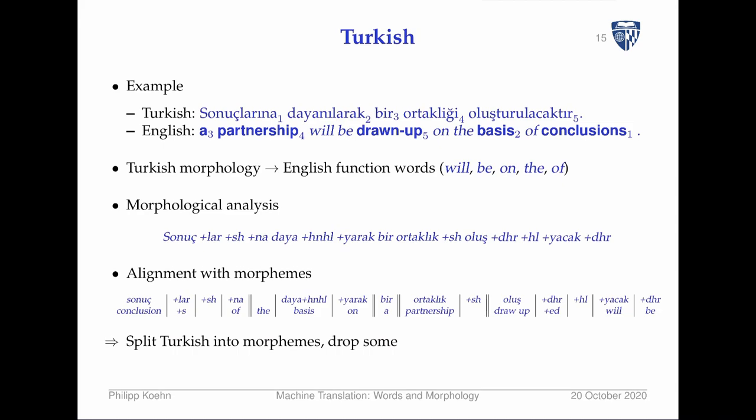This technique of reducing morphology has been especially applied to highly inflected languages like Turkish, Finnish, and Arabic. In Turkish and Finnish, single words can carry inflectional information expressed in English by multiple function words. The approach is to do morphological analysis, split words into morphemes, figure out which morphemes matter — for example, the '-lar' morpheme implies plural — and then map them to English function words.